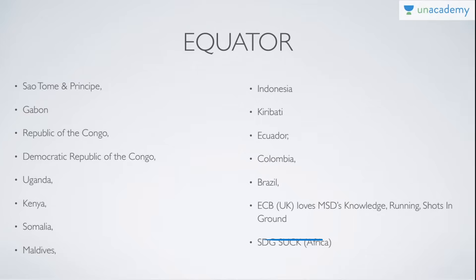So the mnemonic is: ECB of UK loves MSD's knowledge running shorts and ground. ECB gives us Ecuador, Colombia, Brazil. MSD stands for the countries in between. S is for São Tomé and Príncipe, D is for DRC, G is for Gabon, S is for Somalia, U is for Uganda, C is for Congo, and K is for Kenya.